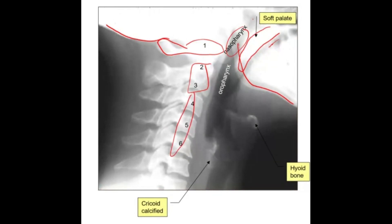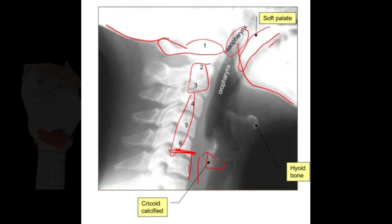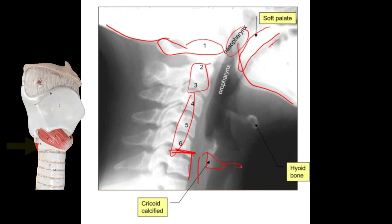The nasopharynx is at the level of C1, then the oropharynx is located at the level of C2 and C3, and then the laryngopharynx is located at the levels of C4, C5, and C6 cervical vertebrae. At the level of C6, the pharynx continues as the esophagus, and also at C6 you can see a slightly calcified shadow of the cricoid cartilage.